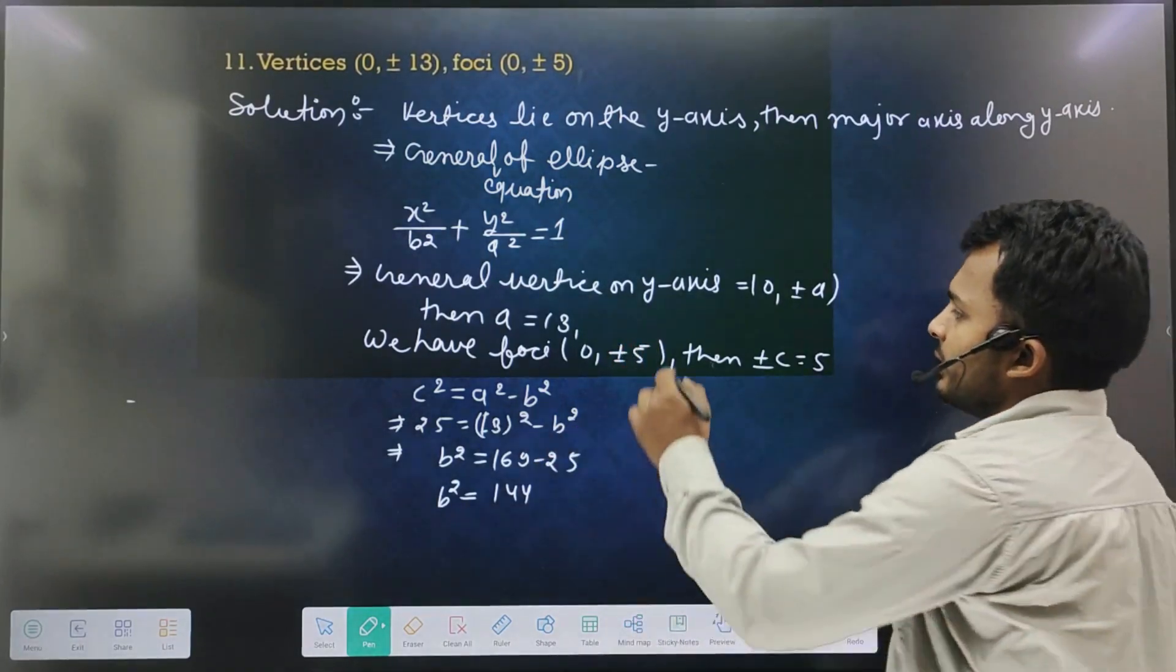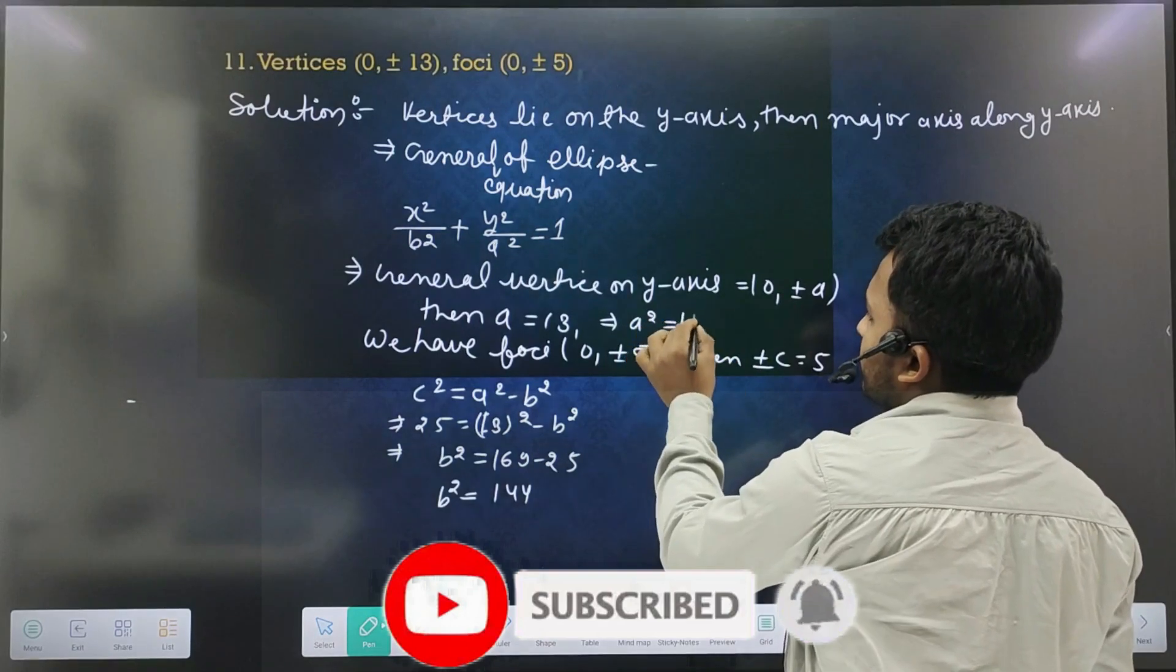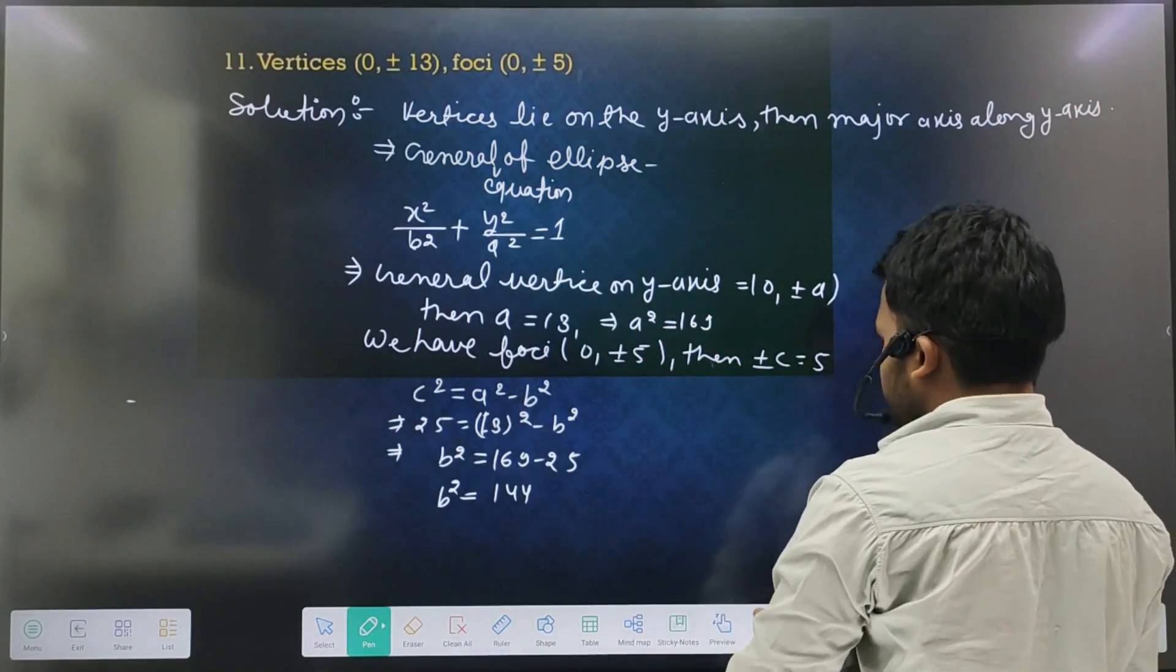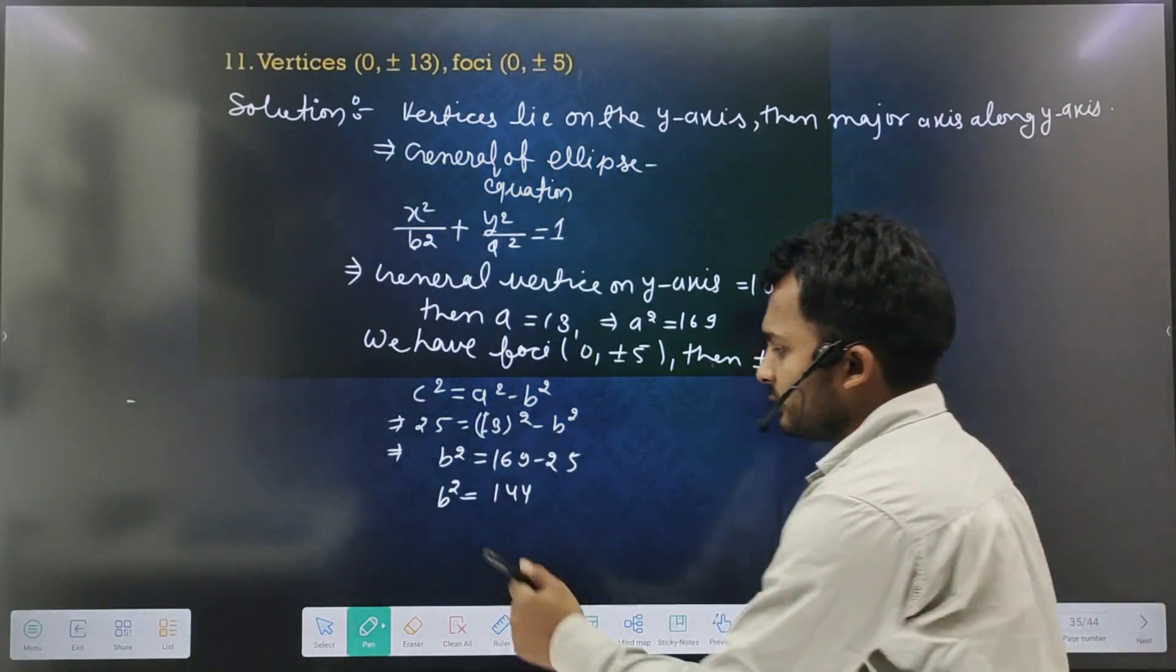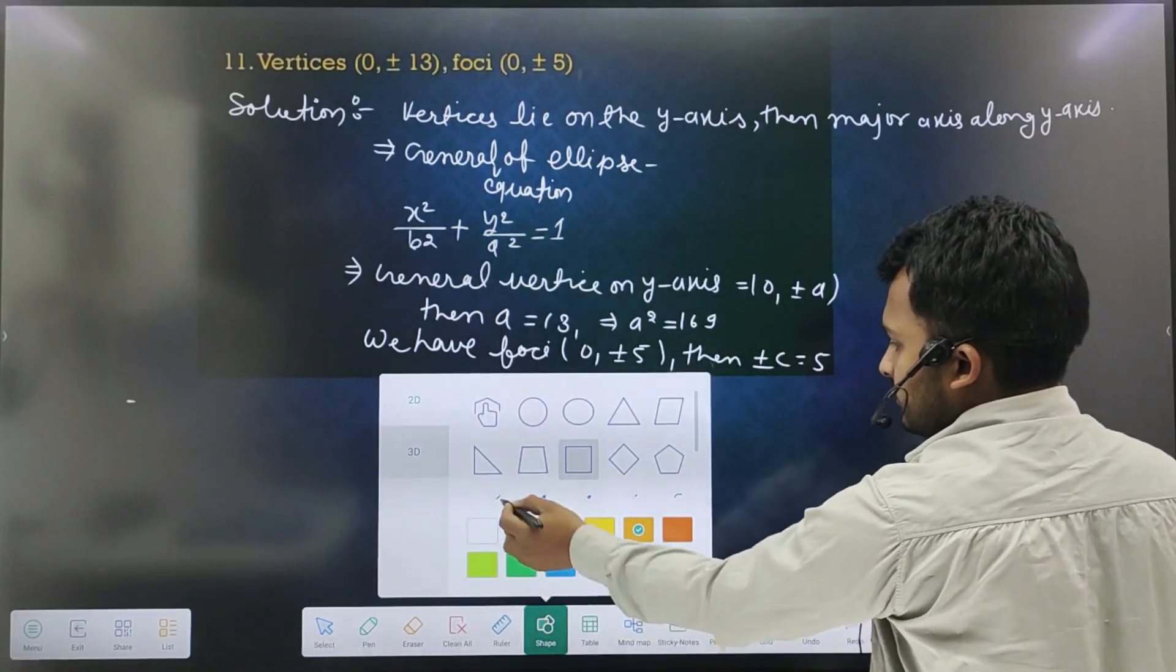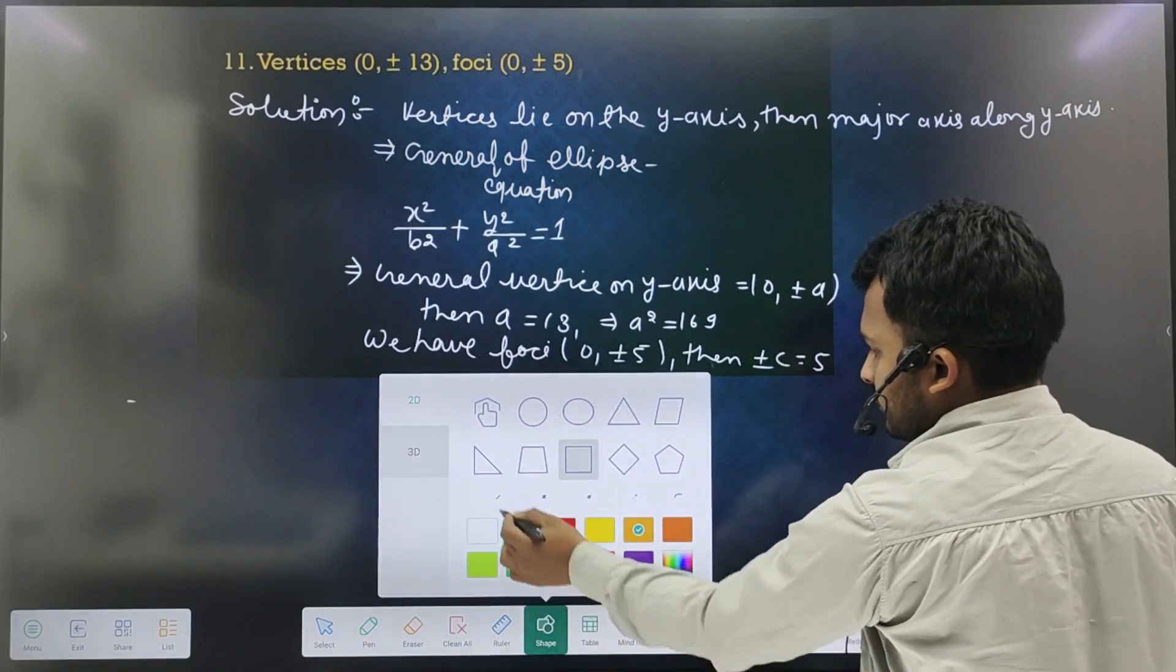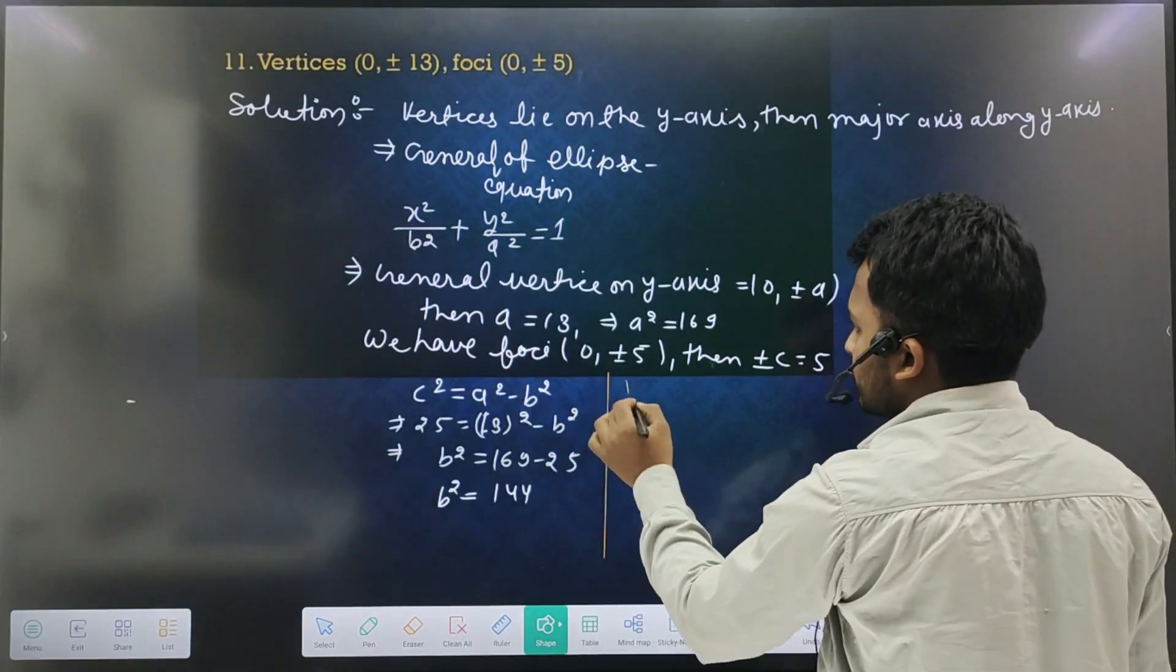Now you will have a value and b value. So put it here. a² equal to 169.